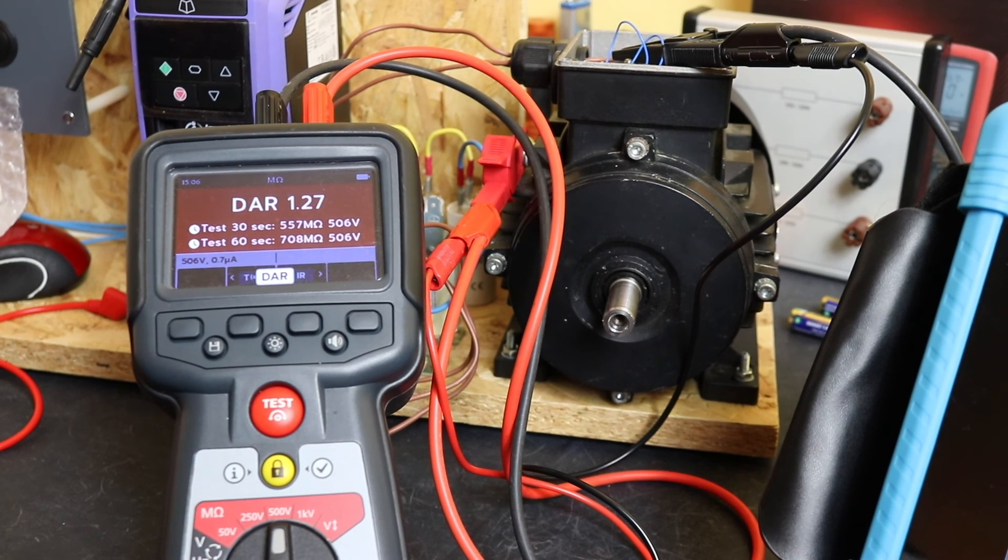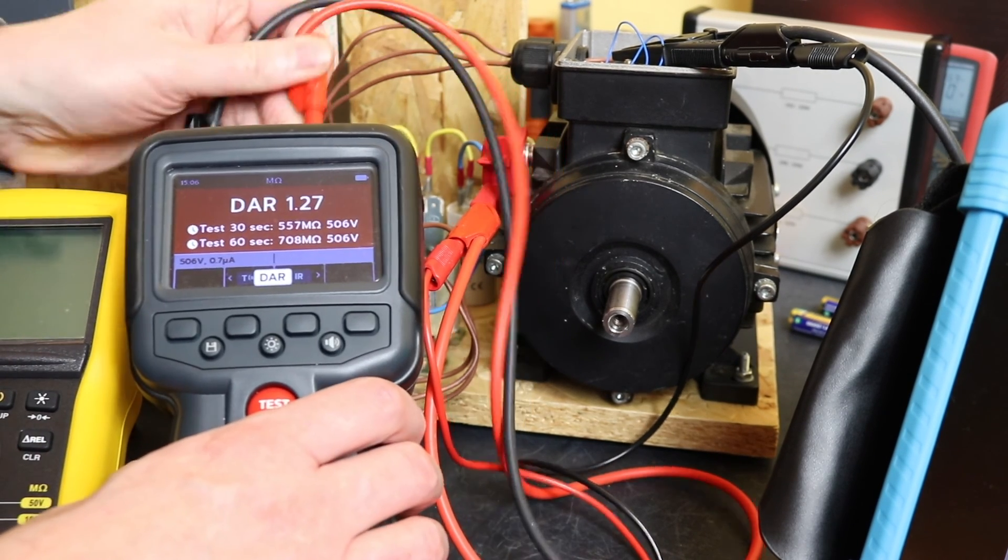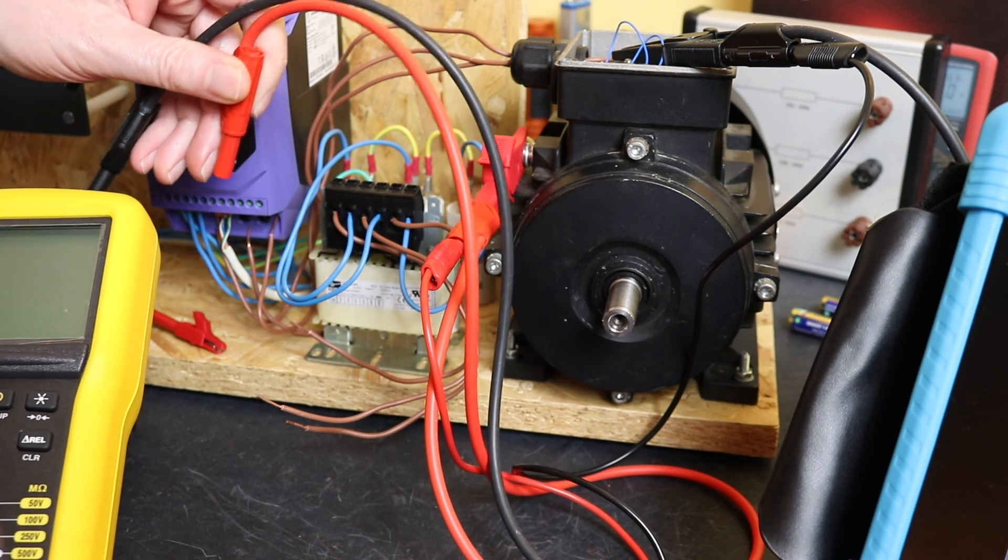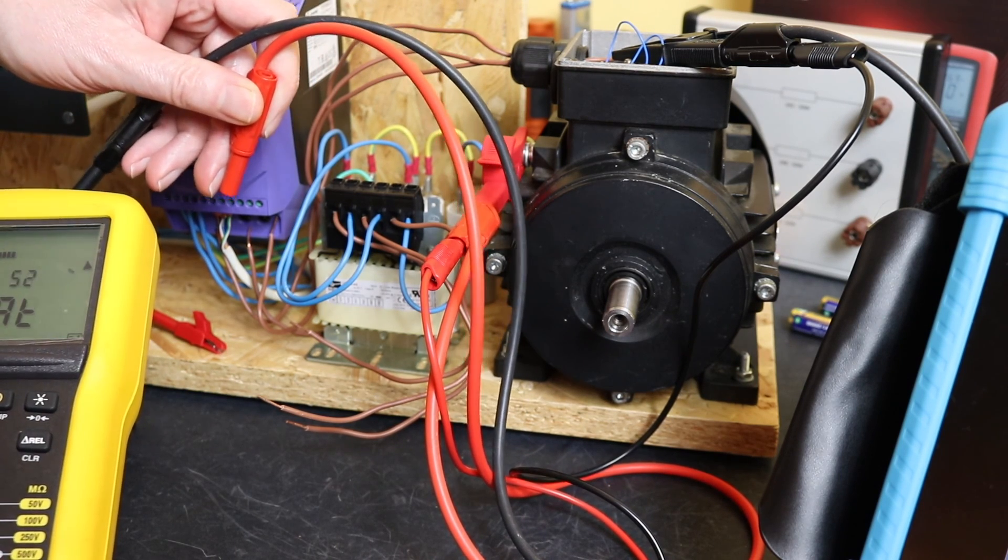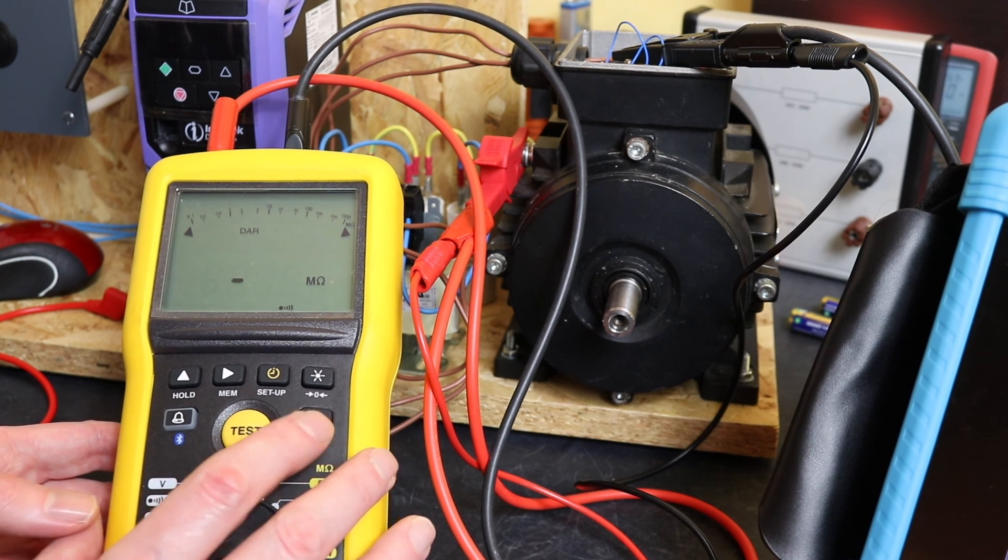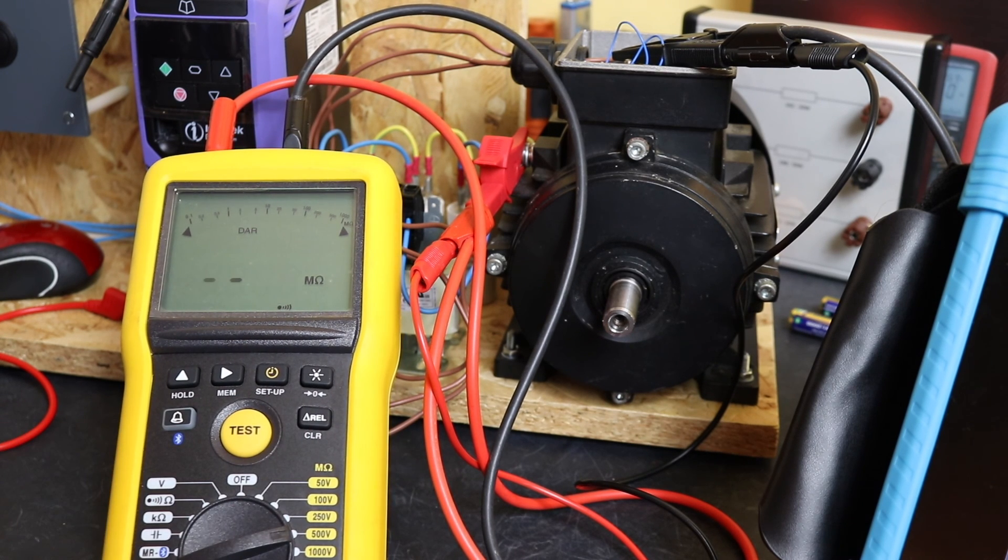What I will just do is do the same with the Chauvin Arnoux unit, because that produced an interesting result. In fact, it was much lower than any of the other two instruments. So we'll set up again and we'll give this a go and see if this oscillates the same, because this did produce much lower readings than any of the other instruments, which is kind of interesting.